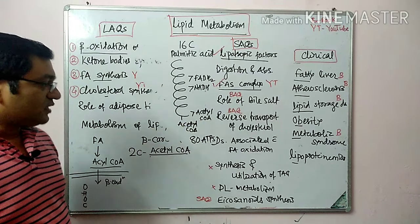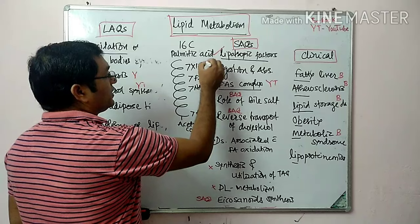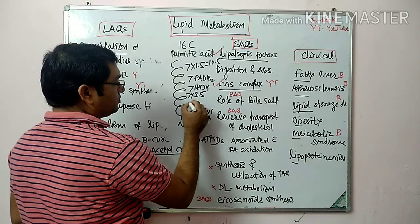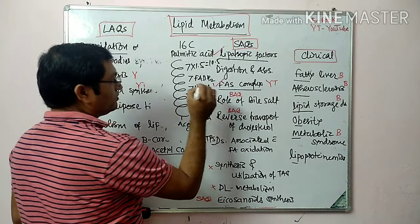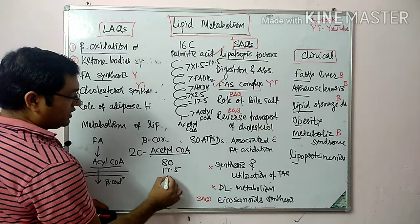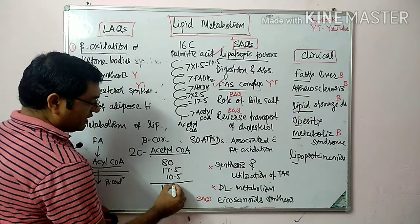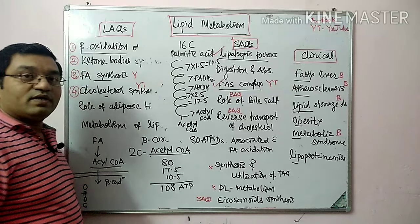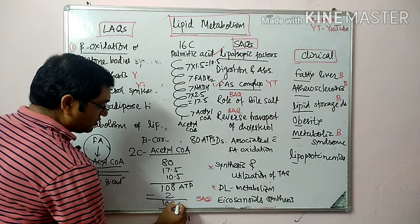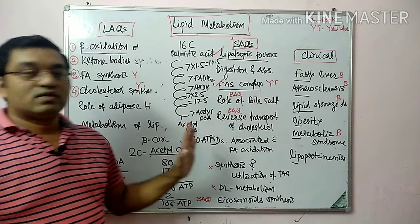Energetics: 8 acetyl coenzyme A give 80 ATP. 7 FADH2 gives 7 × 1.5 = 10.5 ATP. 7 NADH gives 7 × 2.5 = 17.5 ATP. Total: 80 + 17.5 + 10.5 = 108 ATPs. Minus 2 ATPs utilized in the first activation step, giving a net of 106 ATPs generated in beta oxidation of palmitic acid.